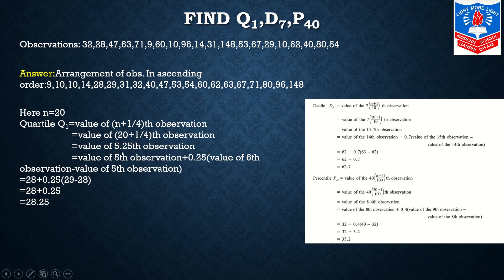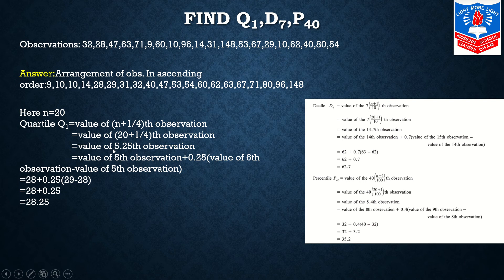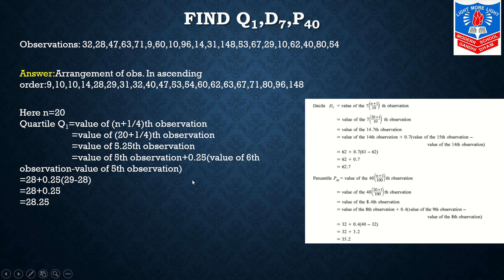5.25 will lie between 5 and 6. Now suppose if it was 6.25, then we would talk about 6th and 7th observation. But over here as it is 5.25, it is value of 5th observation plus 0.25 times (value of 6th observation minus value of 5th observation). We will see the data arranged in order.